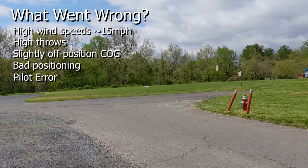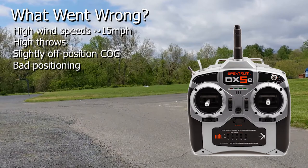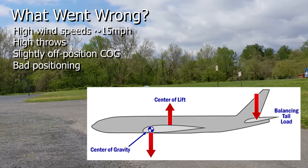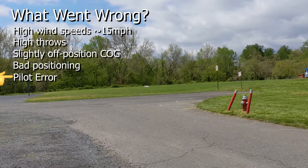So what went wrong? First of all, the winds were rather high that day making it harder to control the plane. Additionally, being a custom-built plane it was difficult to know how responsive it would be — meaning how dramatically the plane would react to stick movements on the transmitter. The plane's center of gravity was also slightly off, which is generally not preferred as planes should be nose heavy. Finally, I should not have stood directly behind the plane as that made it difficult to depth-perceive how far away the trees were. And pilot error — I stood dumbfounded for about 3 seconds as it caught me off guard that the plane was actually flying.